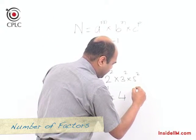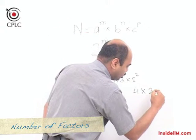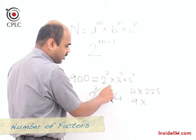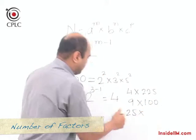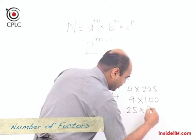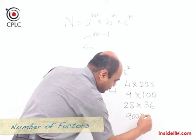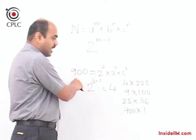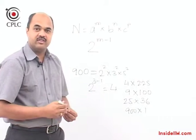The 4 different ways to express 900 as a product of 2 co-prime numbers are: 4 × 225, 9 × 100, 25 × 36, and 1 × 900. Hence there are 4 ways of expressing 900 as a product of 2 numbers which are co-prime or relatively prime.